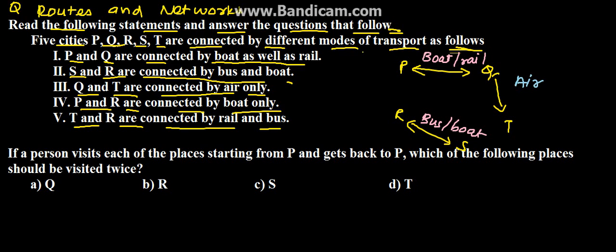Then we have R and T. So R and T, these two are connected either by rail or by bus. And we have P and R. These two are connected by boat.